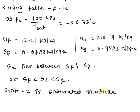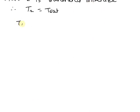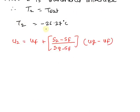Therefore T2 is equal to T saturated, so T2 is equal to minus 26.37 degree celsius. Here we write the formula and substitute values.